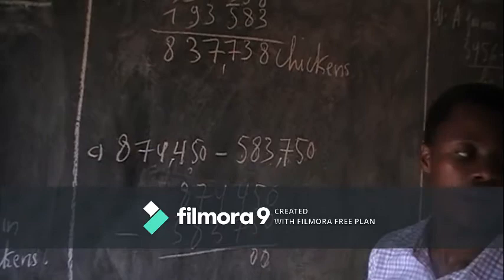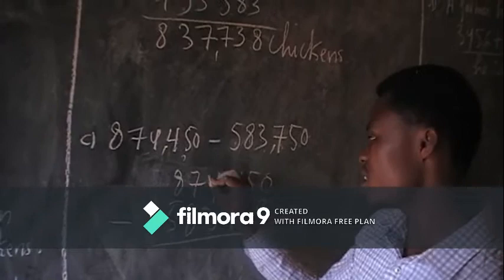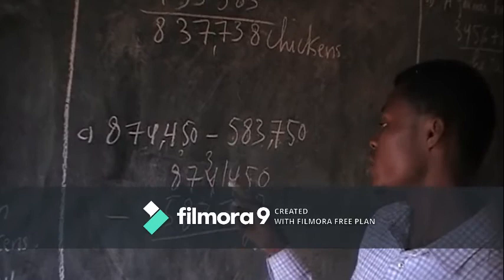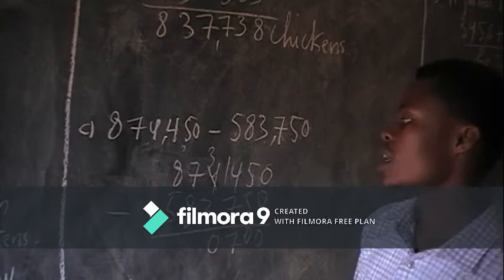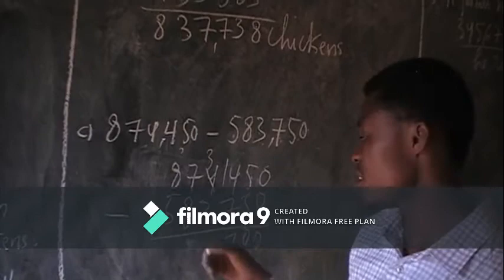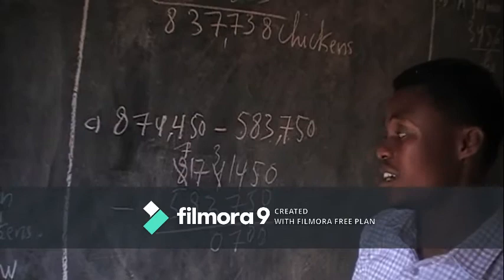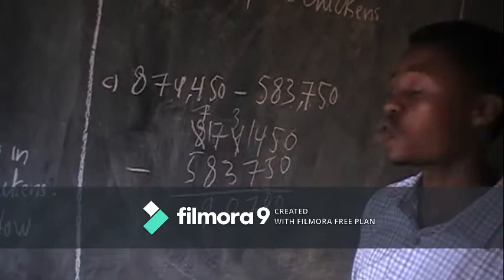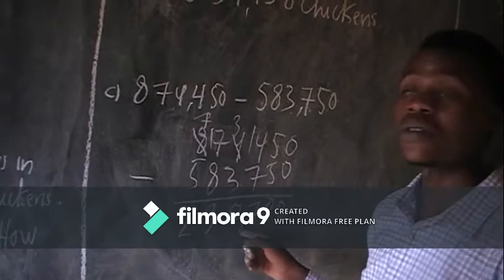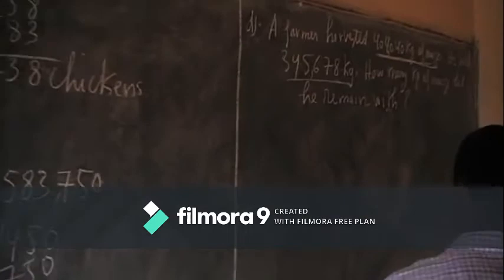Then 0 minus 0 is equal to 0. 5 minus 5 is equal to 0. Then 4 minus 7 is impossible, so we borrow from the next column. 4 becomes 3 and it becomes 14. 14 minus 7 is equal to 7. Then 3 minus 3 is equal to 0. Then 7 minus 8 is impossible because 7 is less than 8. So we borrow 1 from 8, making it 7, and here becomes 17. 17 minus 8 is equal to 9. Then 7 minus 5 is equal to 2. The answer is 290,700.